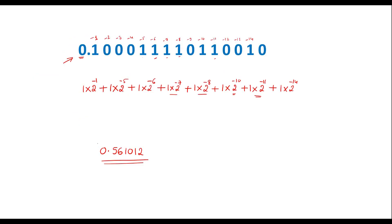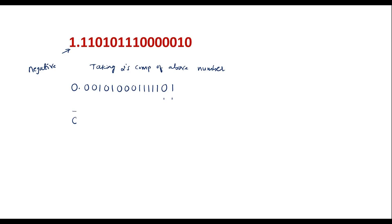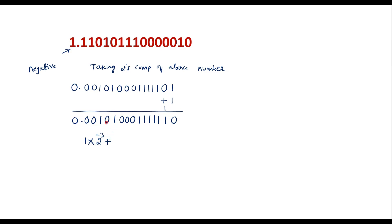We follow the same method as before: consider the position values using base 2 and multiply each bit by its corresponding power. The first 1 bit is at position minus 3, giving 1 into 2 power minus 3. The next 1 bit is at position minus 5, giving 1 into 2 power minus 5.